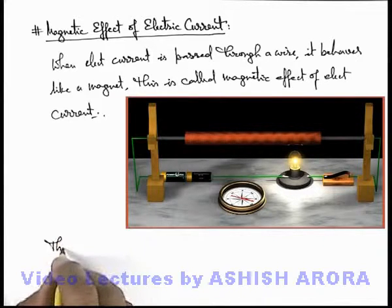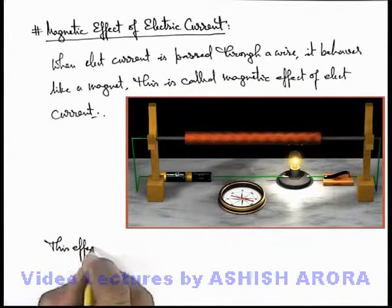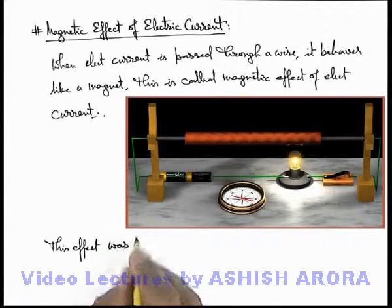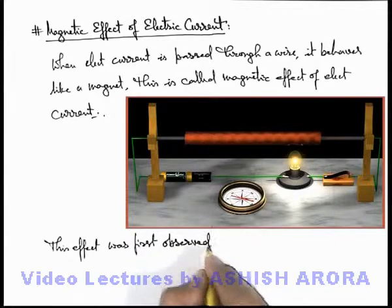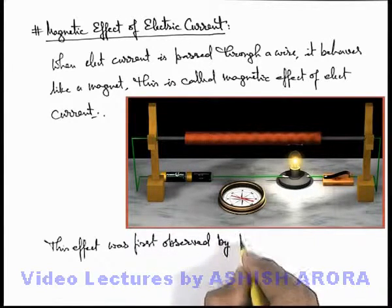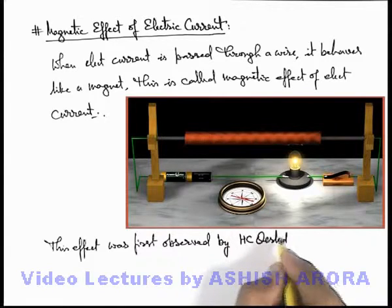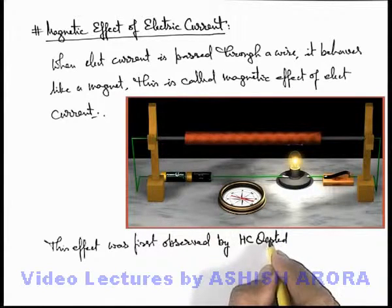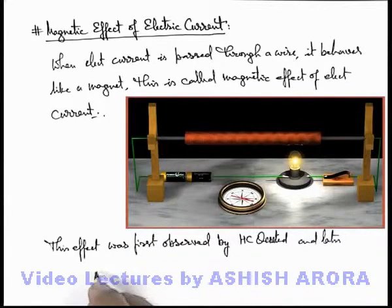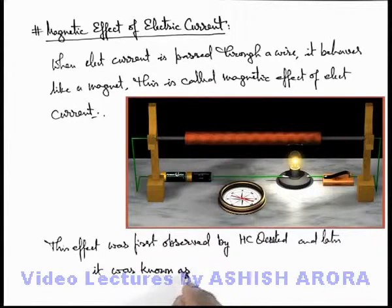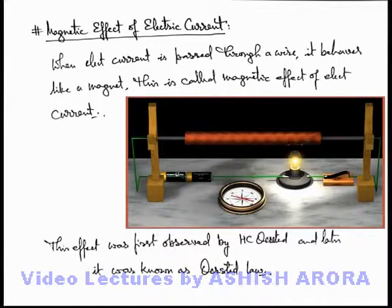And here we can write about this effect. The magnetic effect we are talking about was first observed by a physicist named H.C. Oersted, and later it was known as Oersted's law. In the next section we'll discuss about Oersted's law in detail.